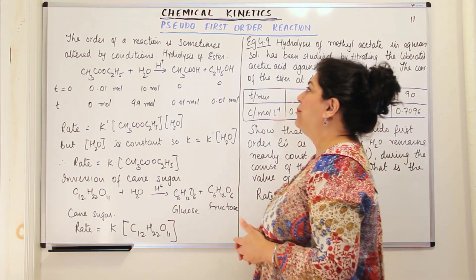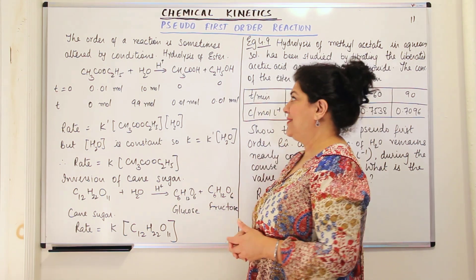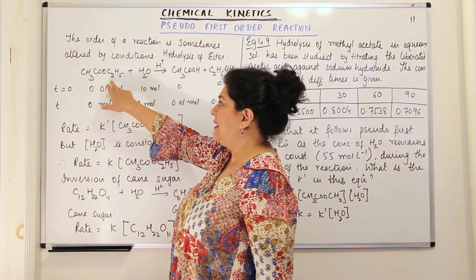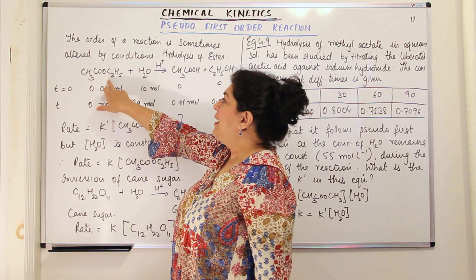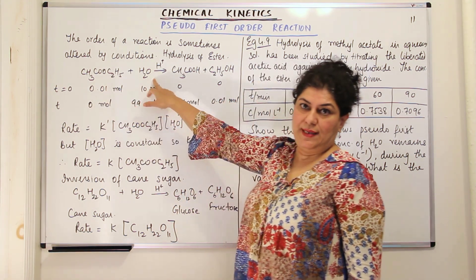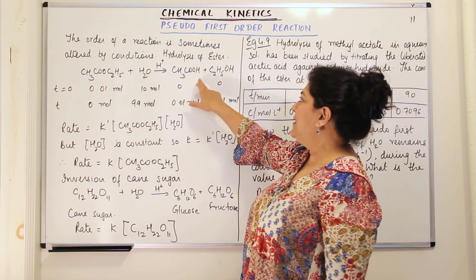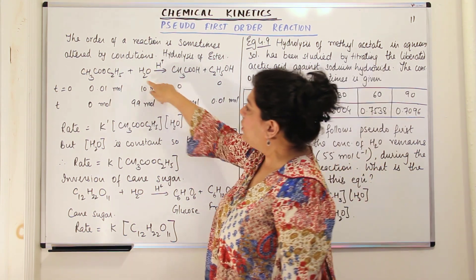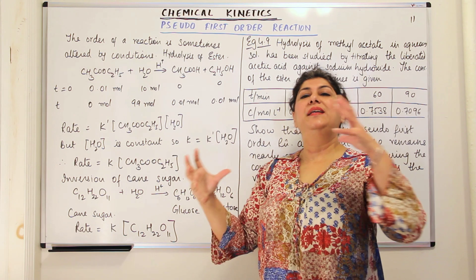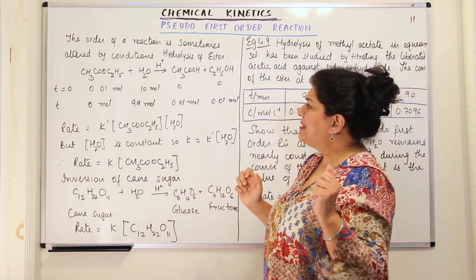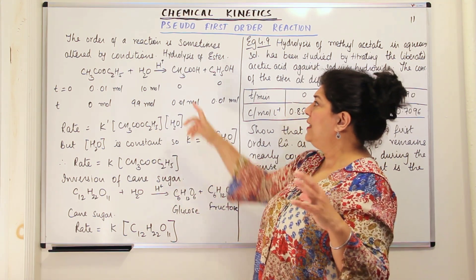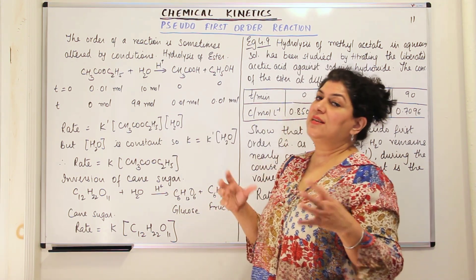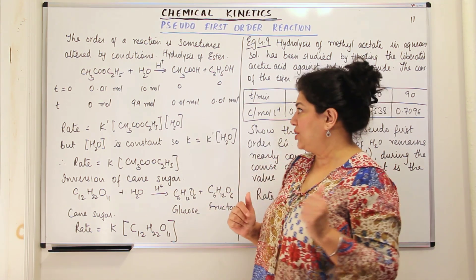One such example is the hydrolysis of esters. In the hydrolysis of esters, you have ethyl acetate, and ethyl acetate on being hydrolyzed in water gives you acetic acid and ethanol. The water present here is in really large quantity, and since it is present in really large quantity, the change in concentration of water as a reactant does not really affect the rate of the reaction.